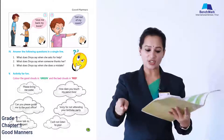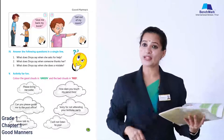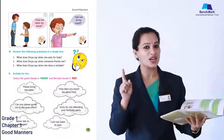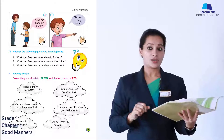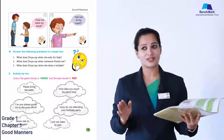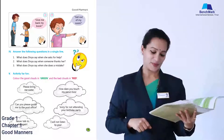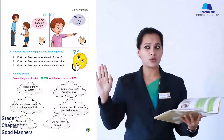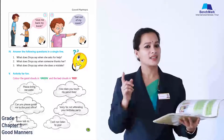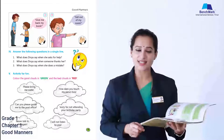'How dare you touch my pencil box!' — that is bad, color it red. 'Sorry for not attending your birthday party, I really missed it' — that is good. 'I will not listen to you, I don't want to hear anything from you' — that is bad, color it red. With this we finished the exercises on page number nine.